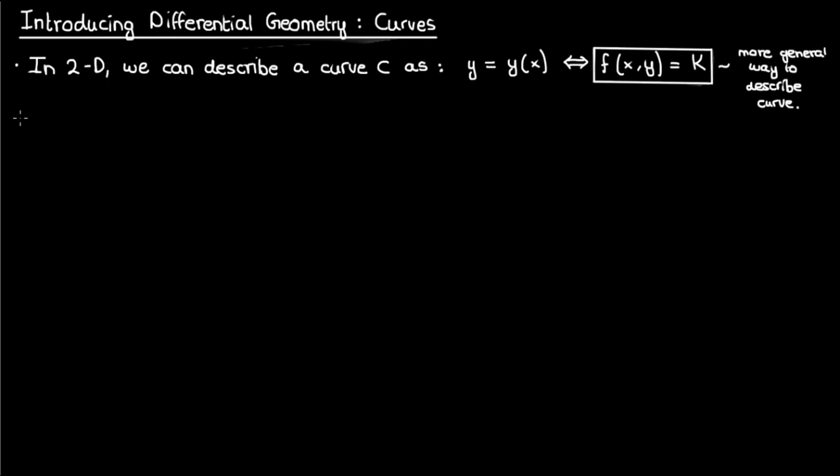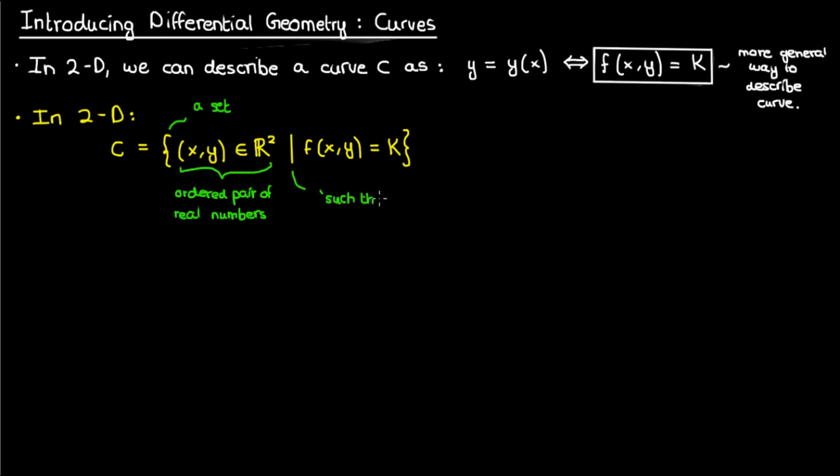Now if we want to use math notation we can describe the curve c as a set of points x comma y such that if we apply the function f to x comma y we get the constant capital k. For those of you that are unfamiliar with math notation these braces mean that c is a set so in this case it's a set of points. The first statement in the braces means that the curve c is defined by a set of ordered pairs that are real numbers while this vertical line means such that.